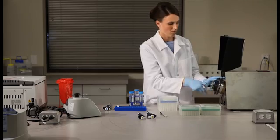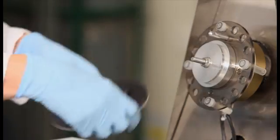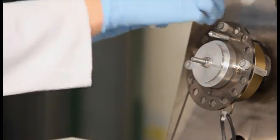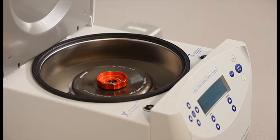Close the safety hood and run the bead beater at maximum speed for 2 minutes. When the instrument stops, remove the tubes and spin for 1 minute at 12,000 G in a microcentrifuge.